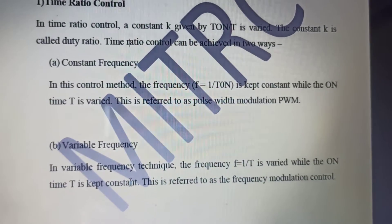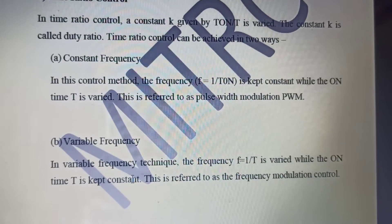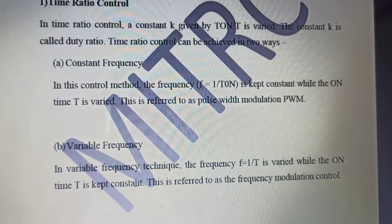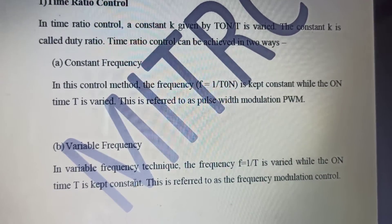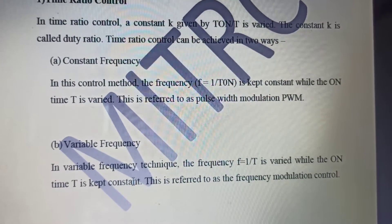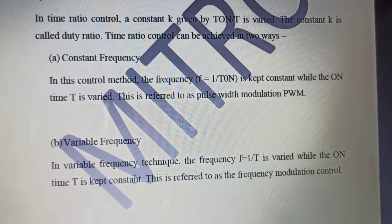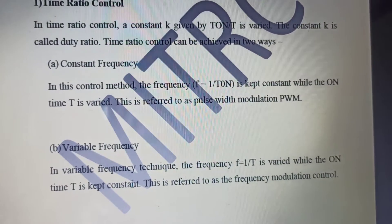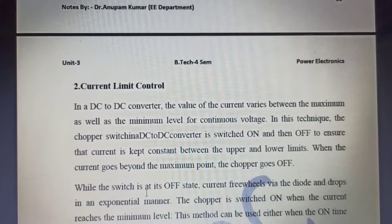One more thing that can be stated about the variable frequency method is that as the time period is varied, then obviously the switching on and switching off duration, despite keeping the duty ratio constant, will vary. So we can very well say that there cannot be a constraint on the losses. The losses cannot be controlled. This is nothing but frequency modulation control.